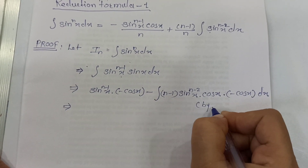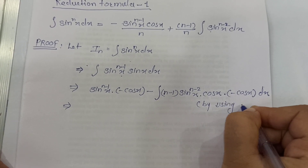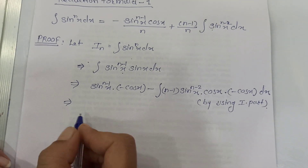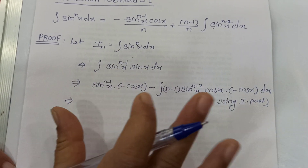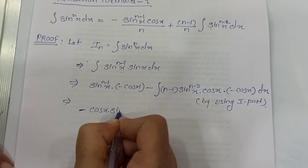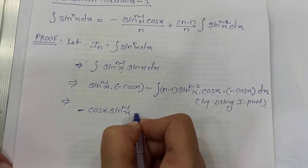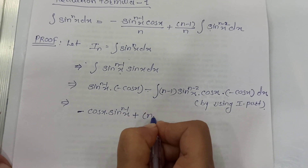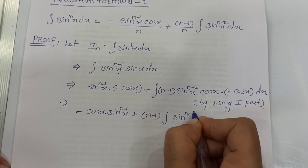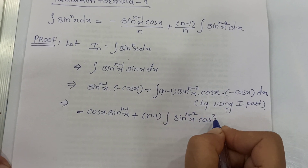Now simplify this expression. This gives us minus cos x sin raised to n minus 1 x. Then the two minus signs become plus, and pulling n minus 1 outside the integration, we are left with sin raised to n minus 2 x, and cos x into cos x gives cos squared x dx.